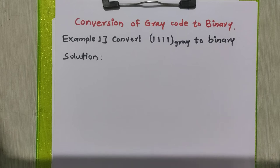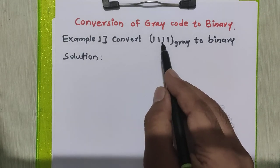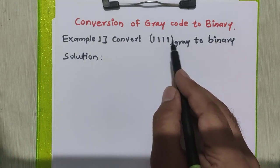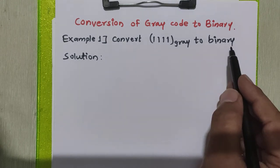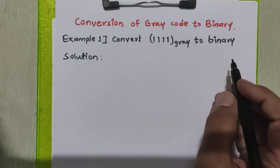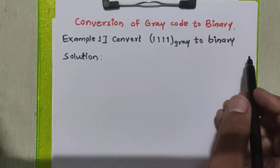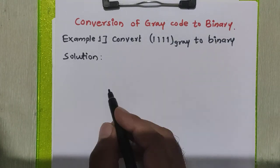Hello friends, in this tutorial we will study how to convert any grey code to binary code. The first example we are going to see is converting 1111 grey to binary. There are certain steps for conversion of grey code to binary code, and we will see all the steps.